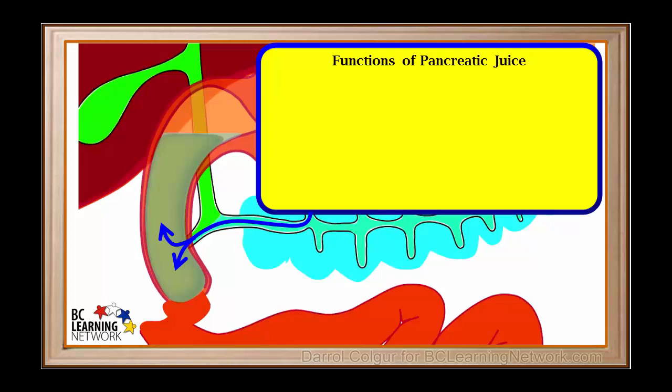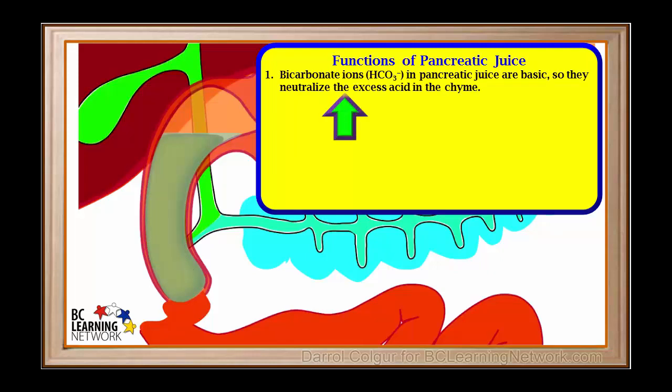Pancreatic juice is a complex mixture of bicarbonate ions and a number of enzymes. It is very important for digestion in the duodenum of the small intestine. Chyme comes from the stomach and is therefore highly acidic, containing many H-plus ions. Bicarbonate ions in the pancreatic juice move into the duodenum and come in contact with the acid present and neutralize it. Now the chyme is no longer acidic and will not harm the intestinal walls. Bicarbonate ions coming in with the pancreatic juice are basic and therefore neutralize excess acid in the chyme.